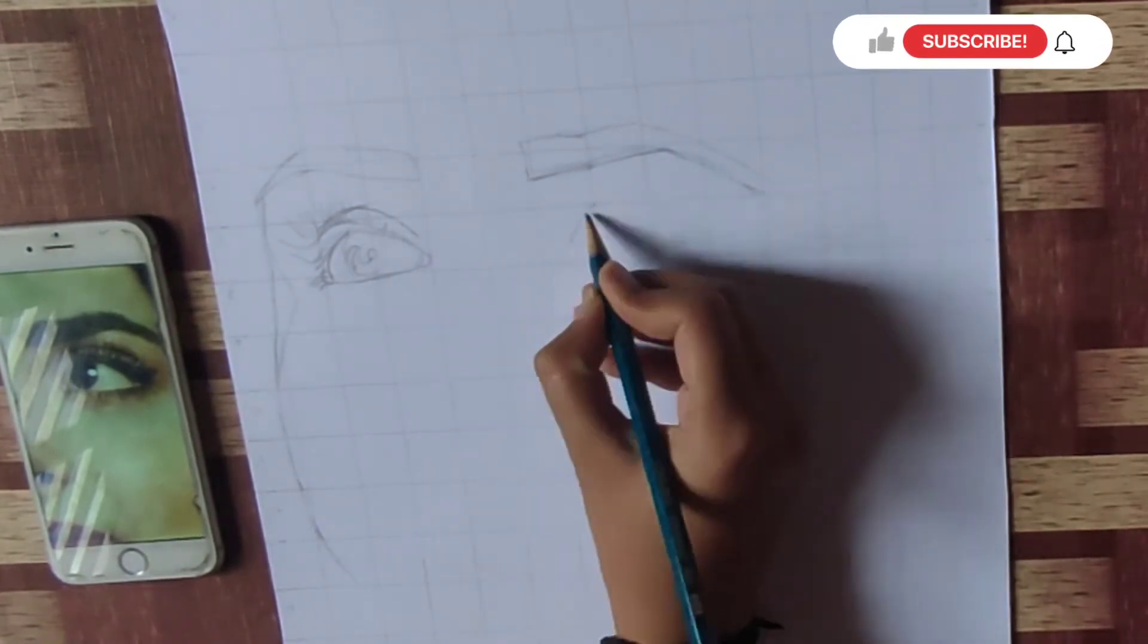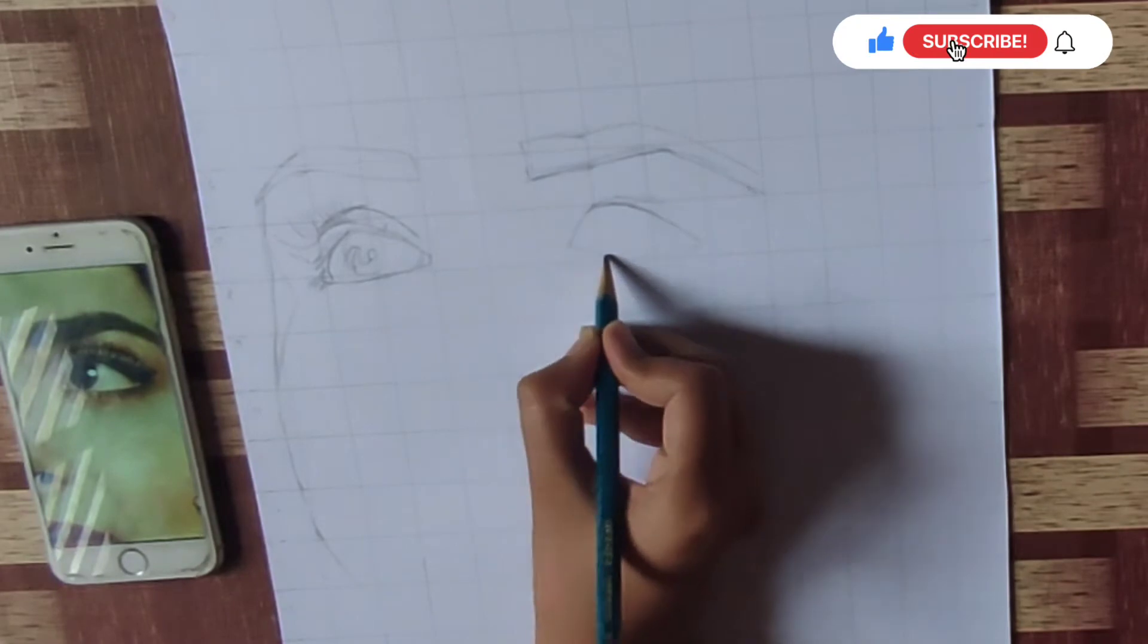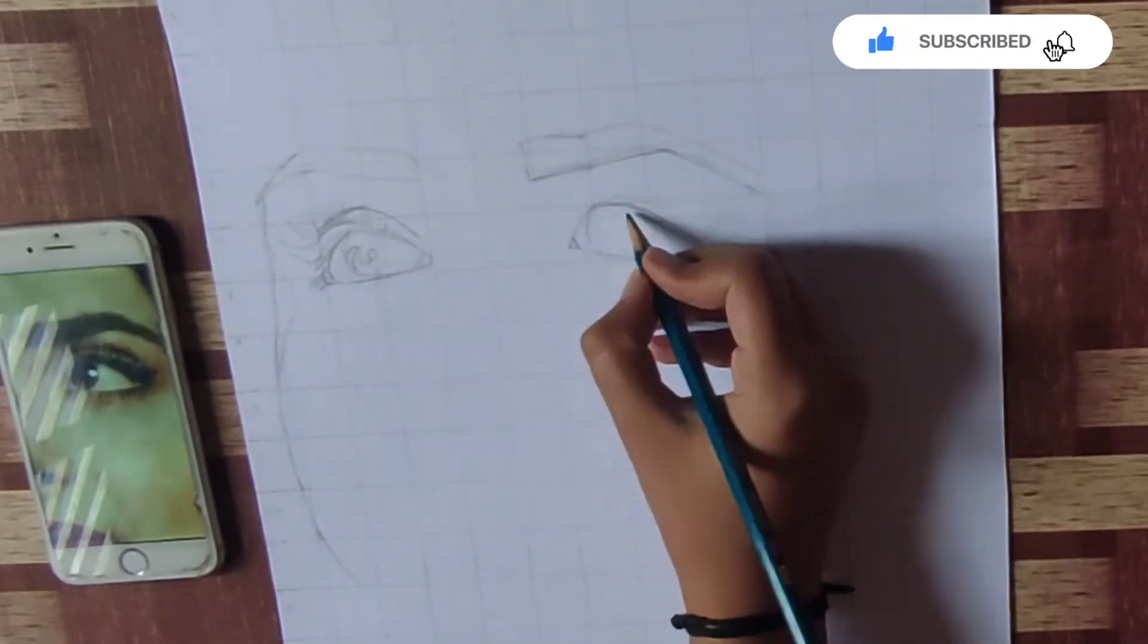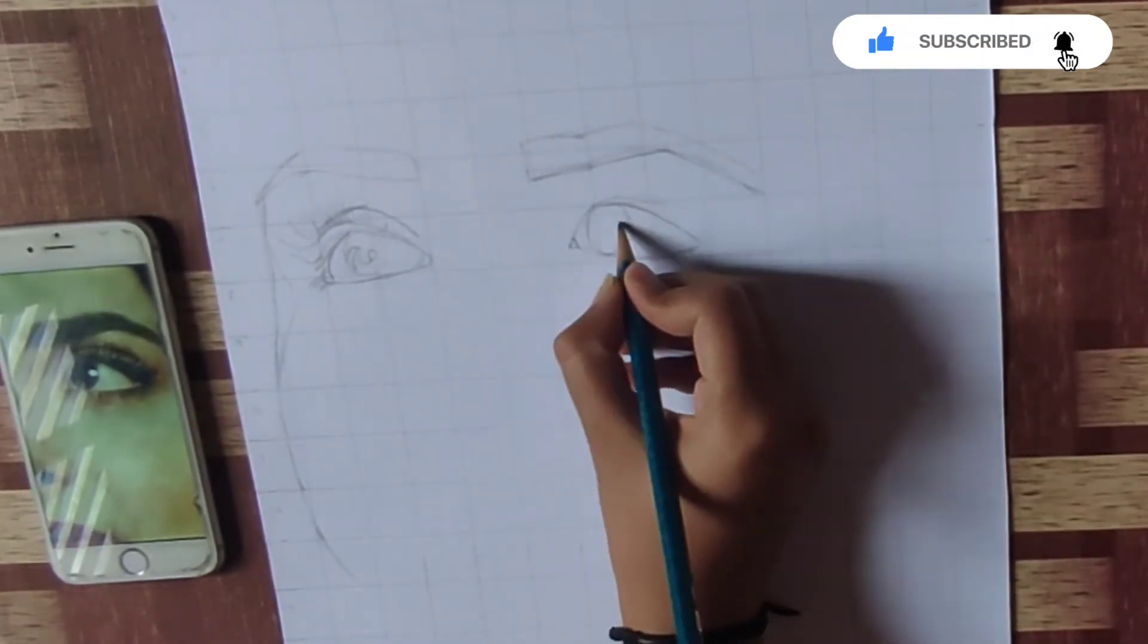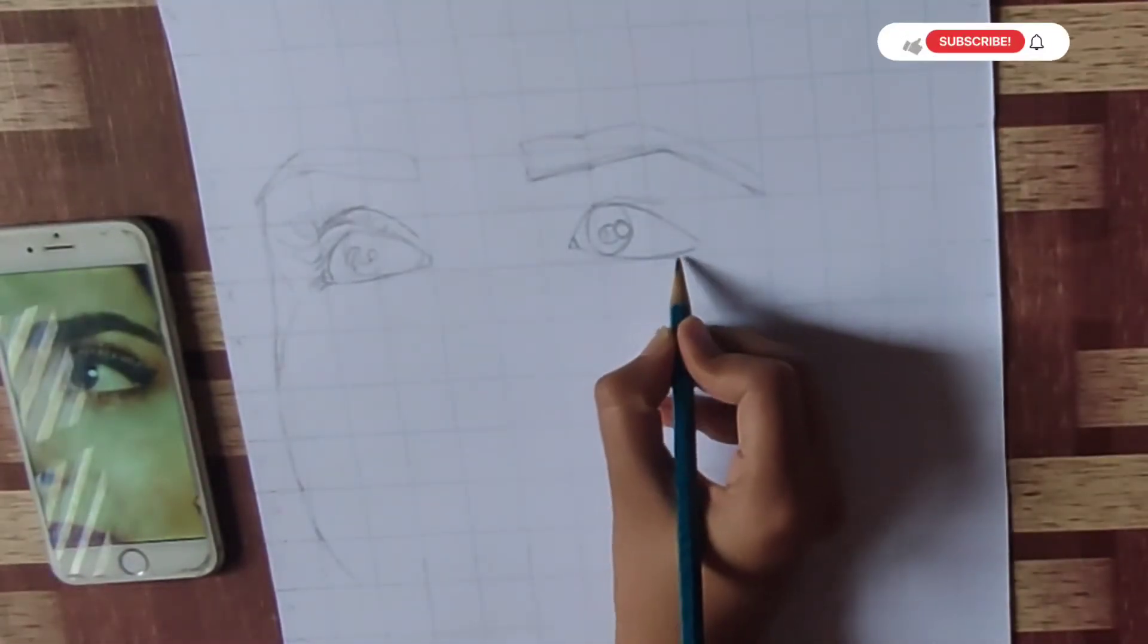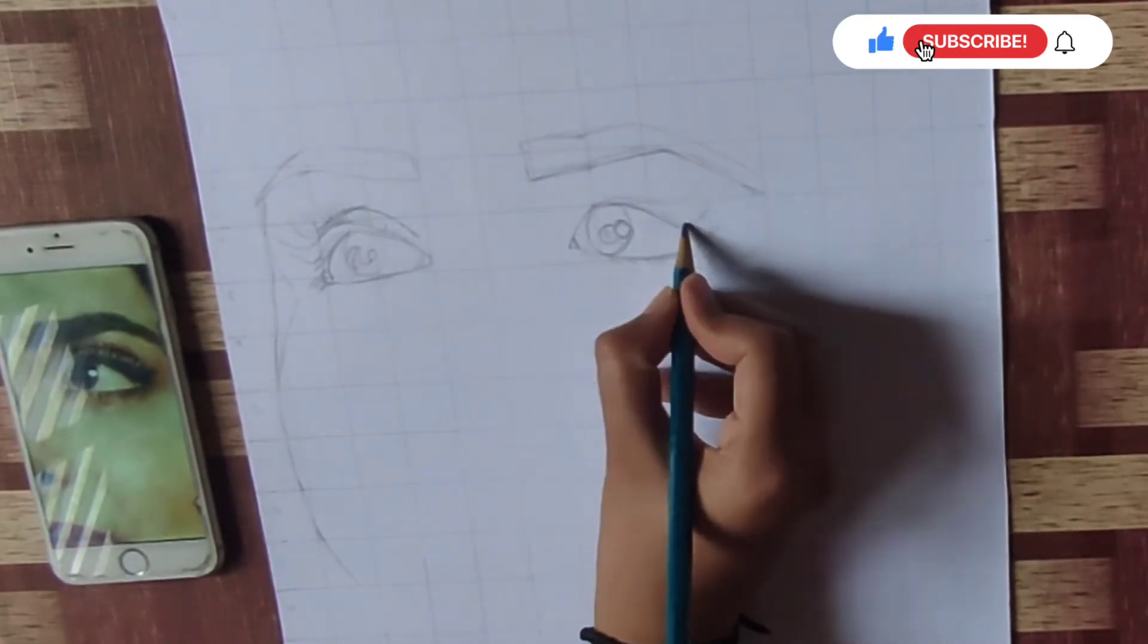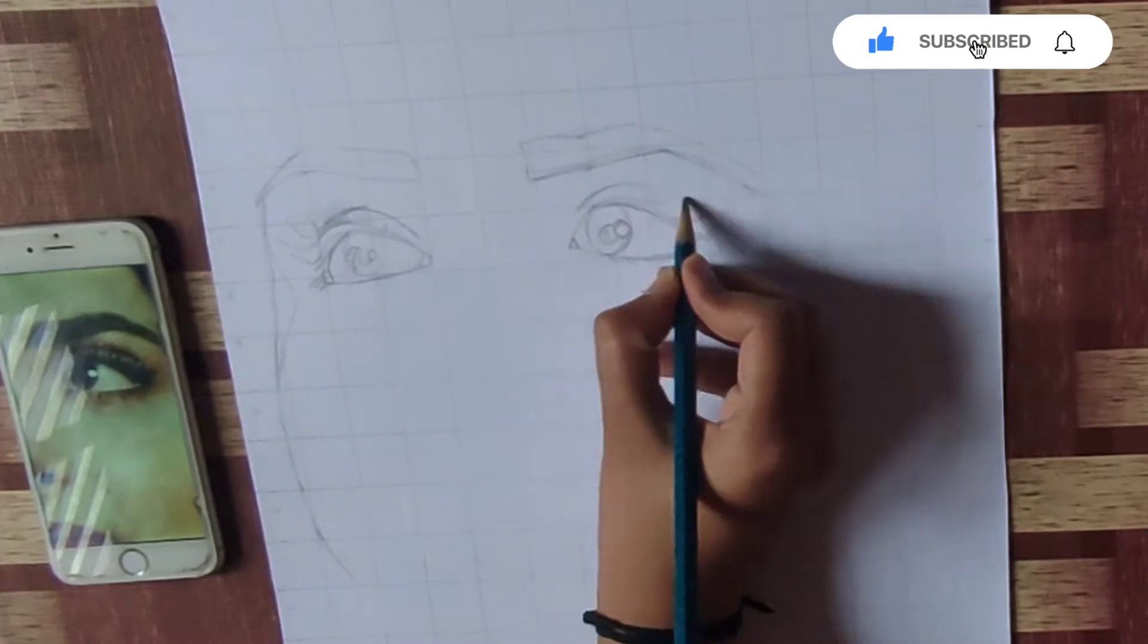Now I am going to draw eyes here. Now I am going to draw a white circle. This is the circle of white. You can draw it well. I am going to draw the eyelashes in the curve line.